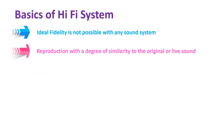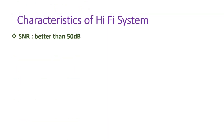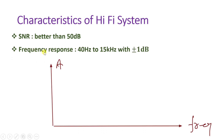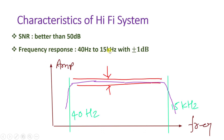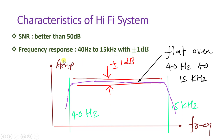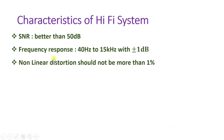Let us see the characteristics of Hi-Fi system. In a Hi-Fi system, signal to noise ratio should be better than 50 dB — this is the basic requirement for signal to noise ratio. Frequency response should range from 40 Hz to 15 kHz with plus or minus 1 dB, and should be flat over that range. Non-linear distortion should be less than 1 percent and should not exceed 1 percent in a Hi-Fi system.